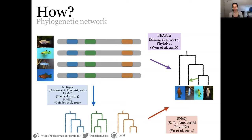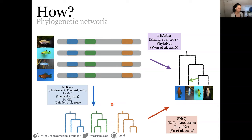There are different flavors of network methods. Some take multi-locus sequences directly as input for estimating an explicit network — examples include two Bayesian methods and PhyloNet. There are also two-step approaches, like in species tree estimation, where we first estimate gene trees from sequences and then estimate an explicit network from those gene trees. PhyloNet has many flavors, and SNaQ, which I created with Cécile Ané, is another two-step method I'll focus on mostly.